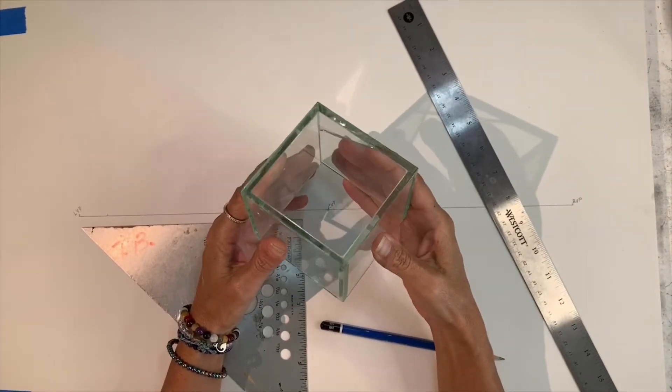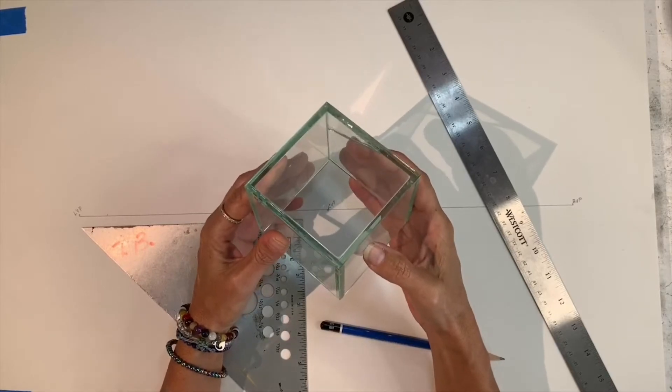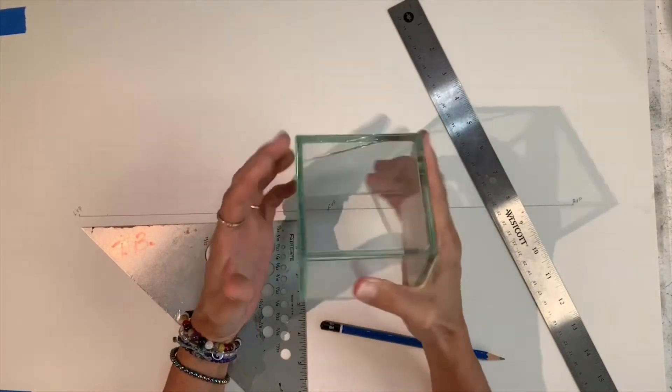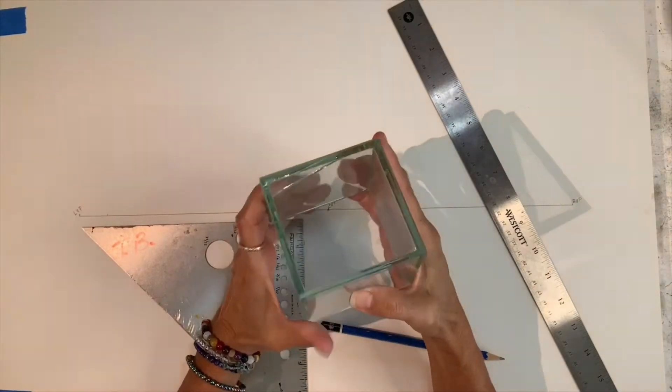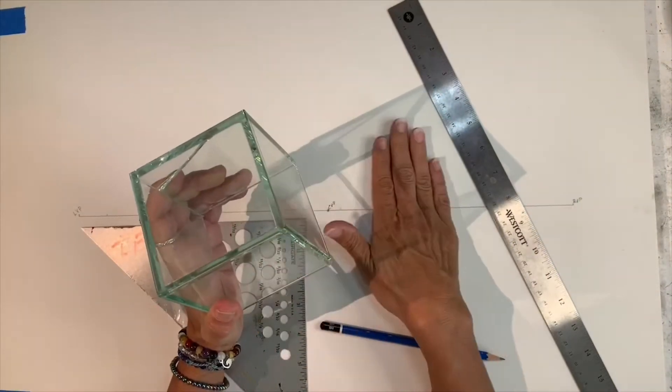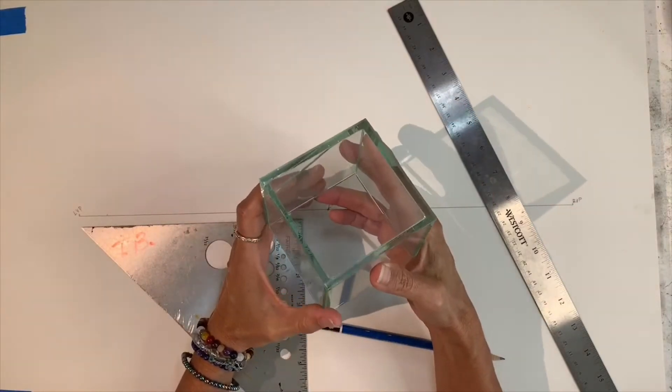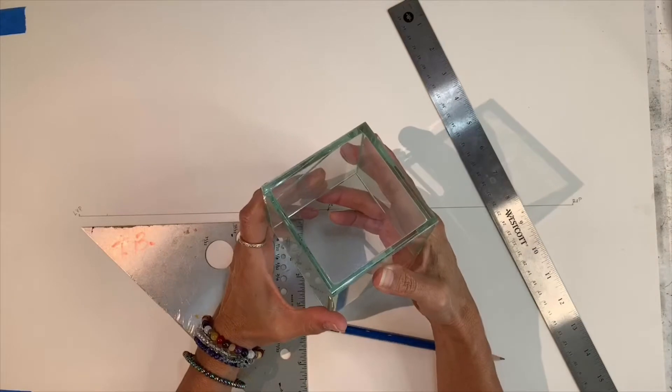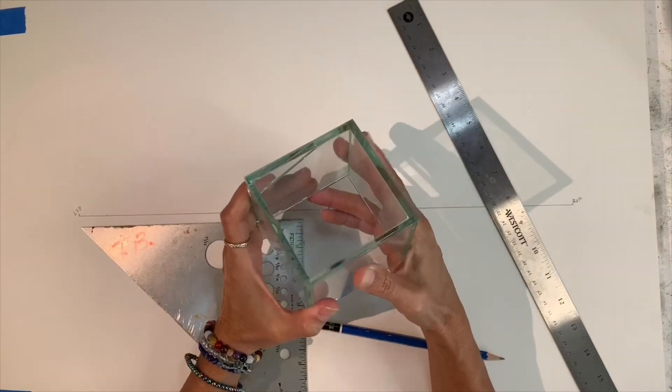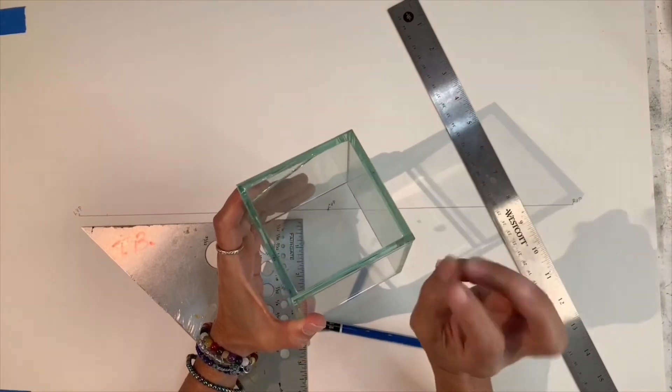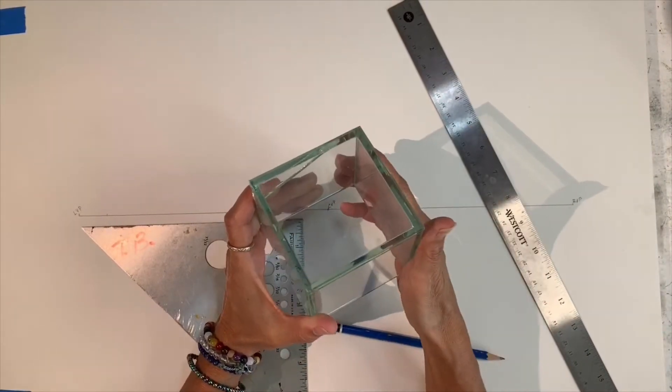Looking at the cube, there are some things to notice. This is a three-dimensional object, and we're going to translate this onto here, which is a two-dimensional surface. In that translation, there are some things to remember. In anything that is three-dimensional, it has a height, it has a width, and it has a depth. So those are the three talking points in perspective.